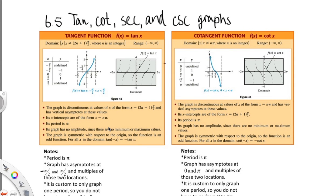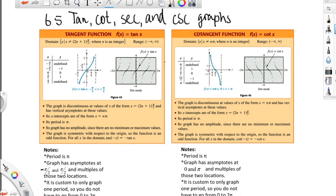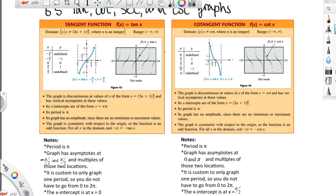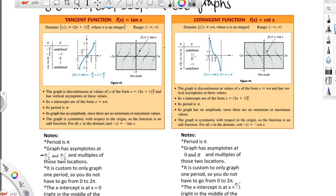6.5: tangent, cotangent, secant, and cosecant graphs. We need to talk about these a little bit — we'll do some examples as well. These are definitely a little different. One of the things, if you look at the picture of a tangent, for example, is you should immediately recognize these as asymptotes.